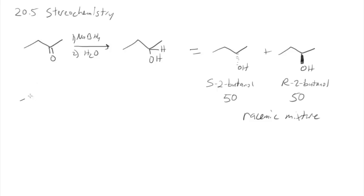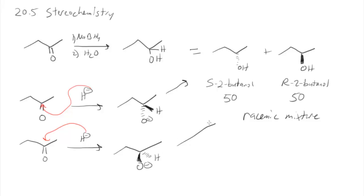How do we get each one of those? If this hydride comes in and adds to the front face of the molecule, the oxygen will be in the back and this new hydrogen will be in front. Then as we reprotonate it, we get the S-2-butanol. If the hydride comes in from the backside of the molecule, that pushes the oxygen to the front, that when we reprotonate it, we get the R-2-butanol.